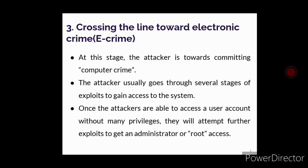The next stage is crossing the line toward electronic crime, or e-crime. In this stage the attacker is going to commit a computer crime by exploiting or utilizing possible holes or vulnerabilities on the targeted system. The easiest way to gain entry is to check user accounts with easily guessable passwords. Once attackers are able to access a user account without many privileges, they will attempt to exploit root access — which is basically administrator or super user access — granting them privileges to do anything on the system. Using this, they will cross the line by committing e-crime.